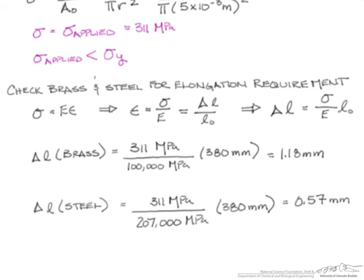So, that is Young's modulus for steel times our 380 millimeters. So, the final elongation for steel would be 0.57 millimeters.